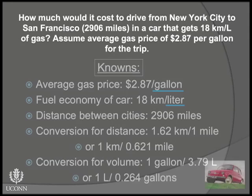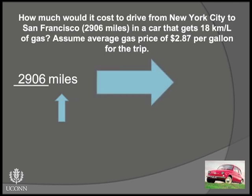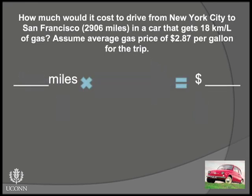We can use the same strategy on this problem that we did for the first problem. First, we have to know where we are starting — what is the value we are given and what its unit is. The starting point given is the distance between New York City and San Francisco, so our starting unit is miles. The goal of the problem is to determine the cost, so our end unit is dollars. In this case, I don't know how to relate miles directly to dollars, so we know there will be more than one conversion factor needed.